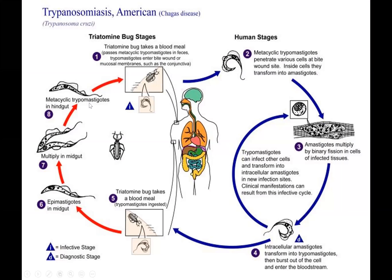So this is trypanosoma cruzi. Starting at step one: the biting bug takes its blood meal. There's the trypomastigote, the infective stage. It enters into the bloodstream. Here's the human stage: the metacyclic trypomastigote gets into the cells as amastigote, multiplying in the tissue. The trypomastigote can infect other cells as it develops, or be harvested again by a bite of the bug — the bug takes it in, multiplies in the midgut to the hindgut, and it's ready to be transferred to its next victim.